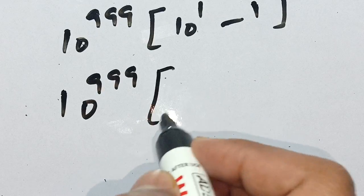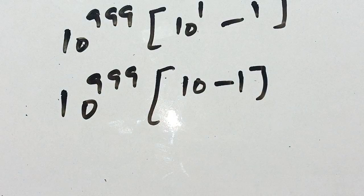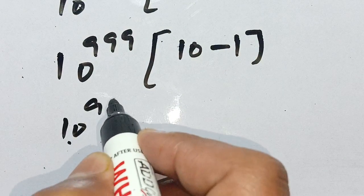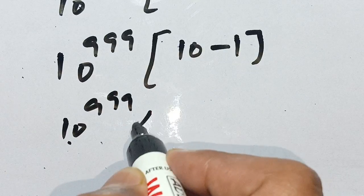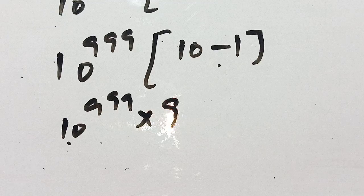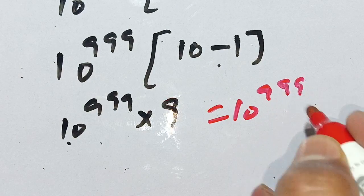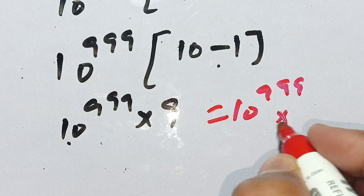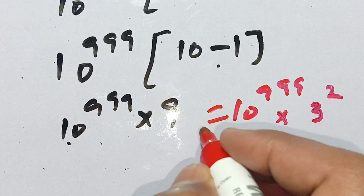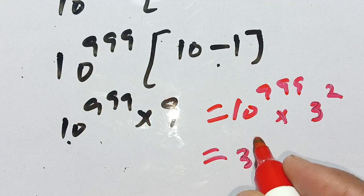In the next step we have 10 raised to power 999 times (10 minus 1), which becomes 9. So we can write this as 10 raised to power 999 times 9, and 9 can be written as 3 raised to power 2, since 3^2 equals 9.